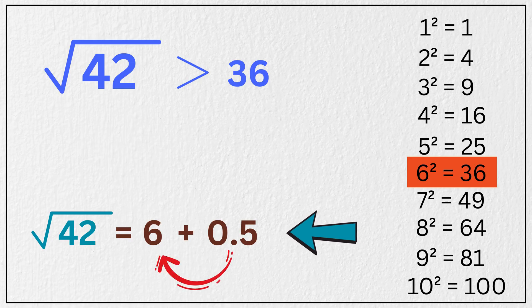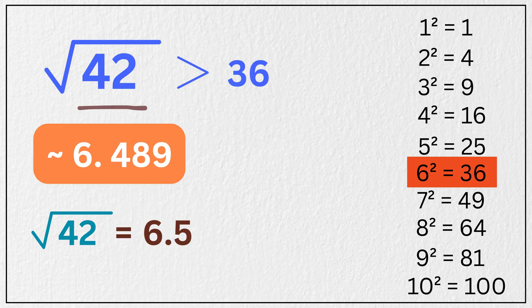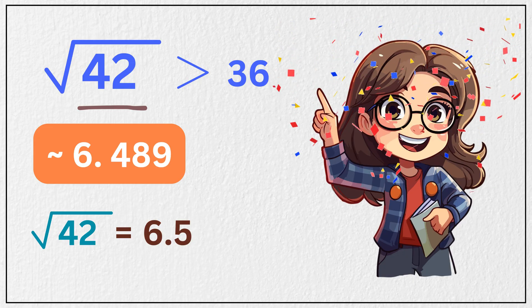Add that to 6, and you get 6.5. The actual square root of 42 is about 6.489. Once again, pretty amazing, right?